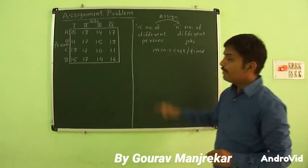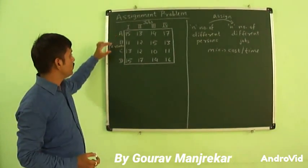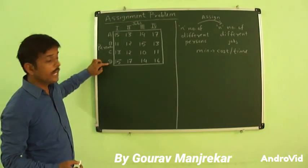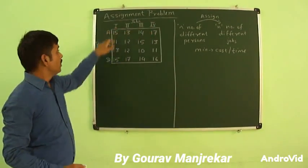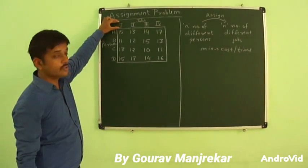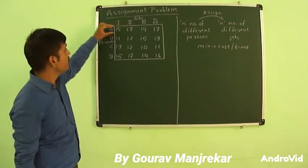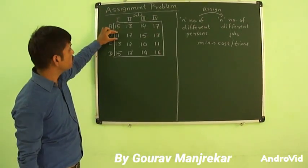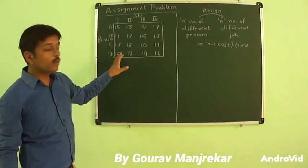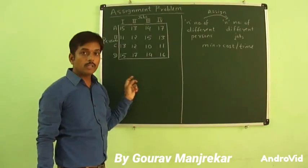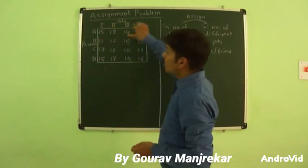Here we have a problem with 4 persons written in rows: A, B, C and D, and 4 jobs: 1st, 2nd, 3rd and 4th. If we assign the 1st person to the 1st job the cost is 15; if the 1st person is assigned to the 2nd job the cost is 13; if the 2nd person is assigned to the 1st job the cost is 11. We have to minimize the total cost by assigning these 4 persons to 4 jobs.